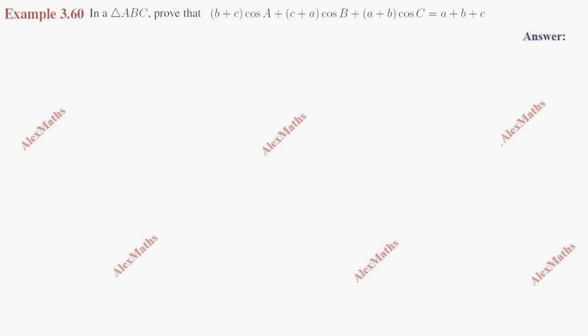Hi students, this is Alex here. Example 3.60: In a triangle ABC, prove that B plus C cos A plus C plus A cos B plus A plus B cos C equals A plus B plus C.